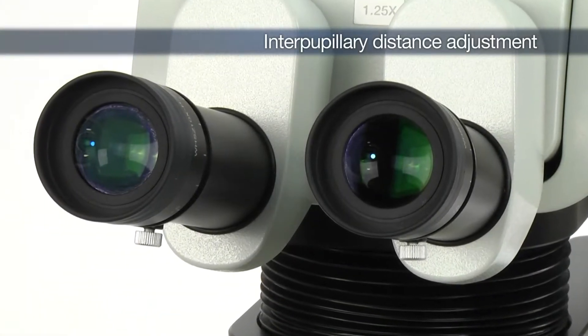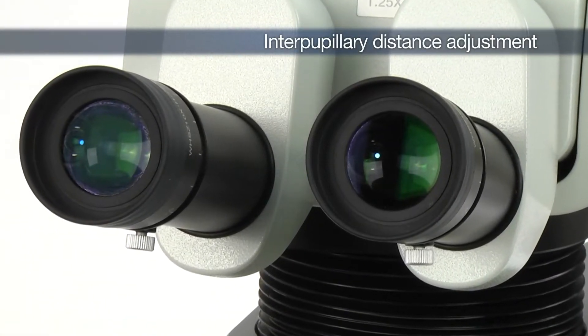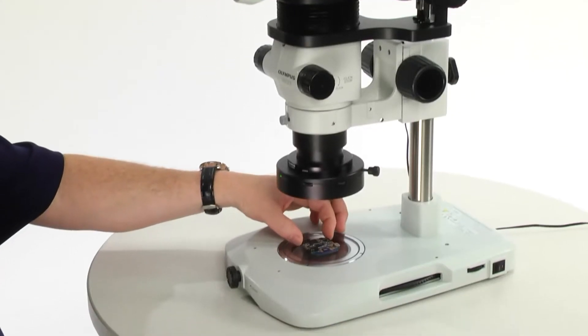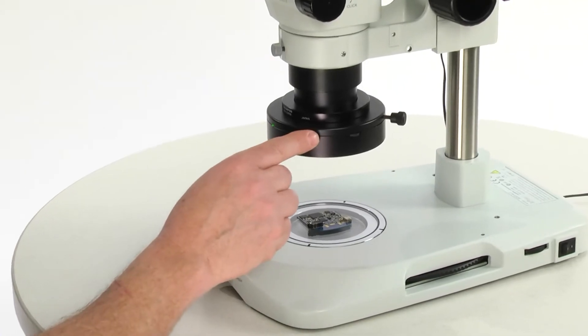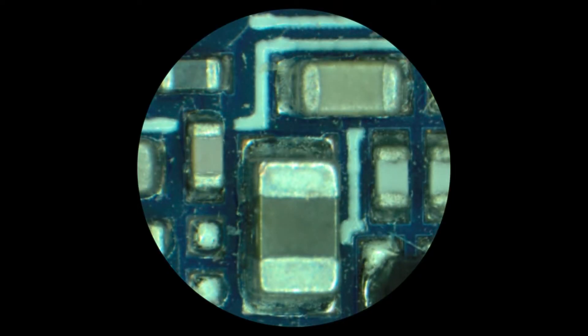Adjusting the interpupillary distance is necessary to obtain proper binocular vision. First, place a flat sample on the stage. Adjust the lighting and bring the sample into focus.